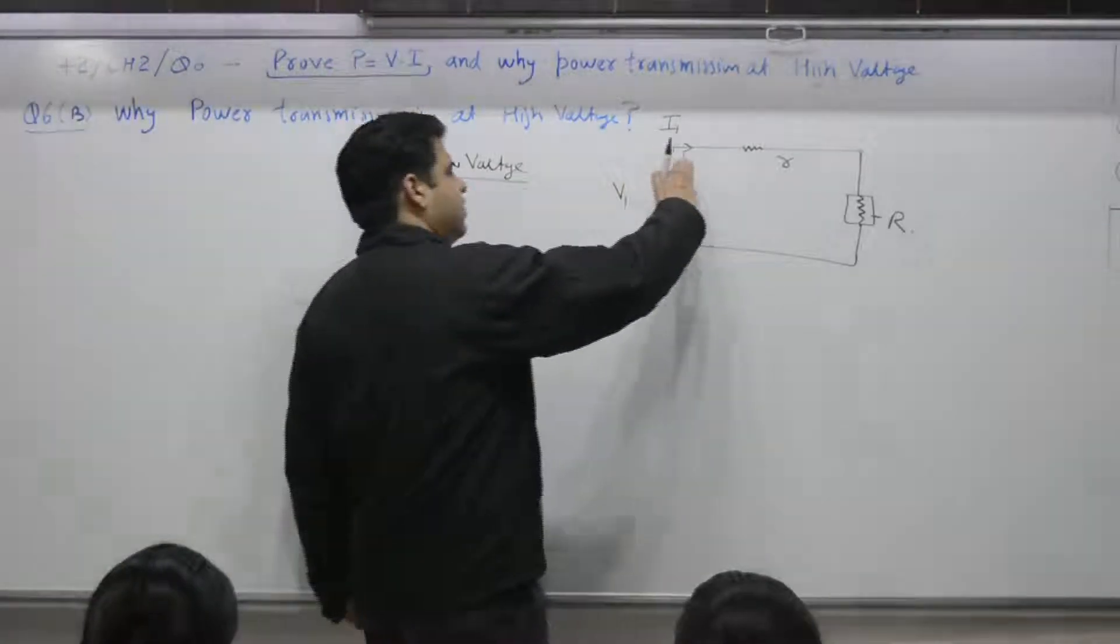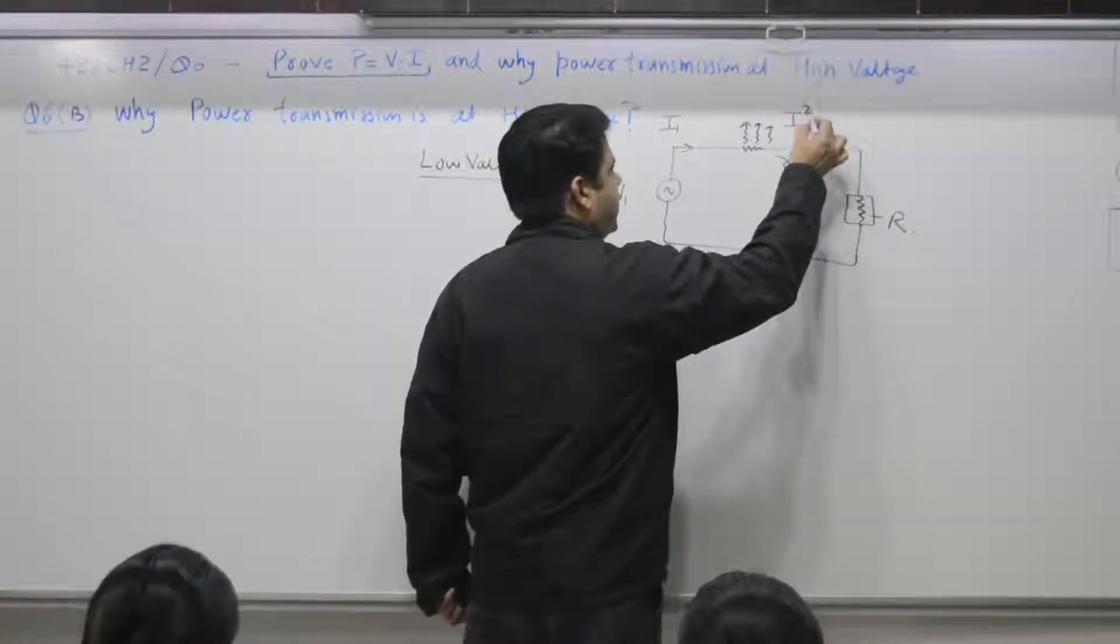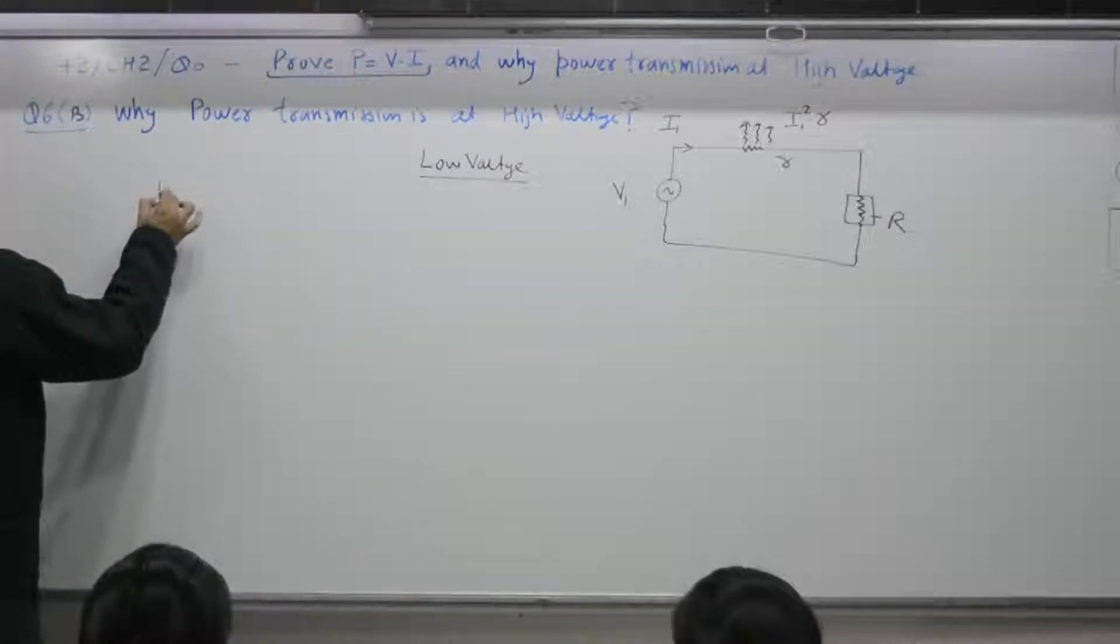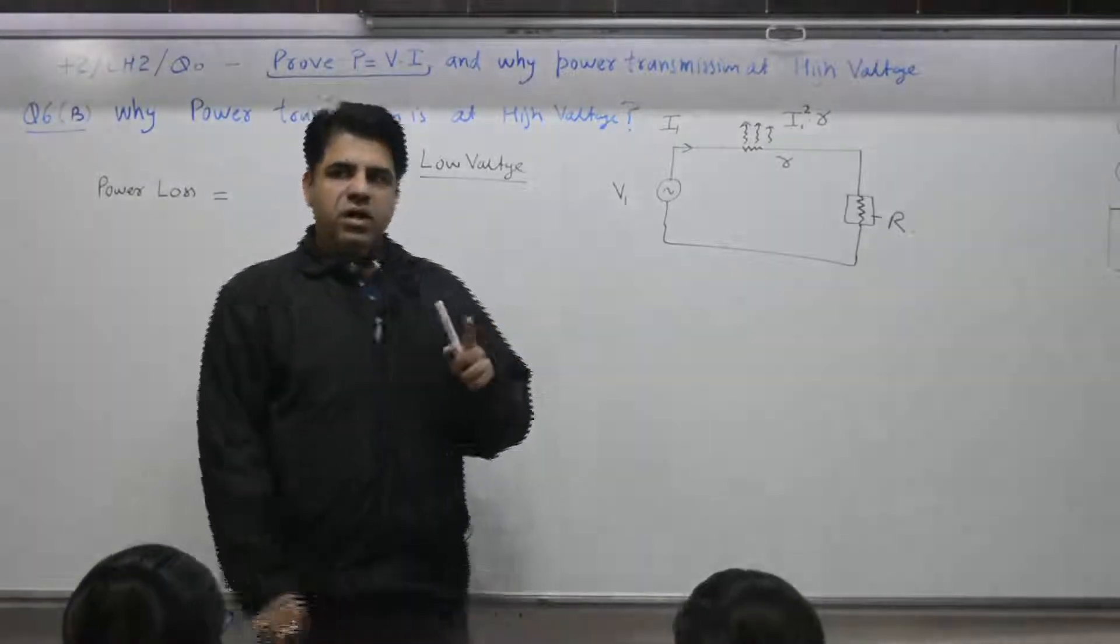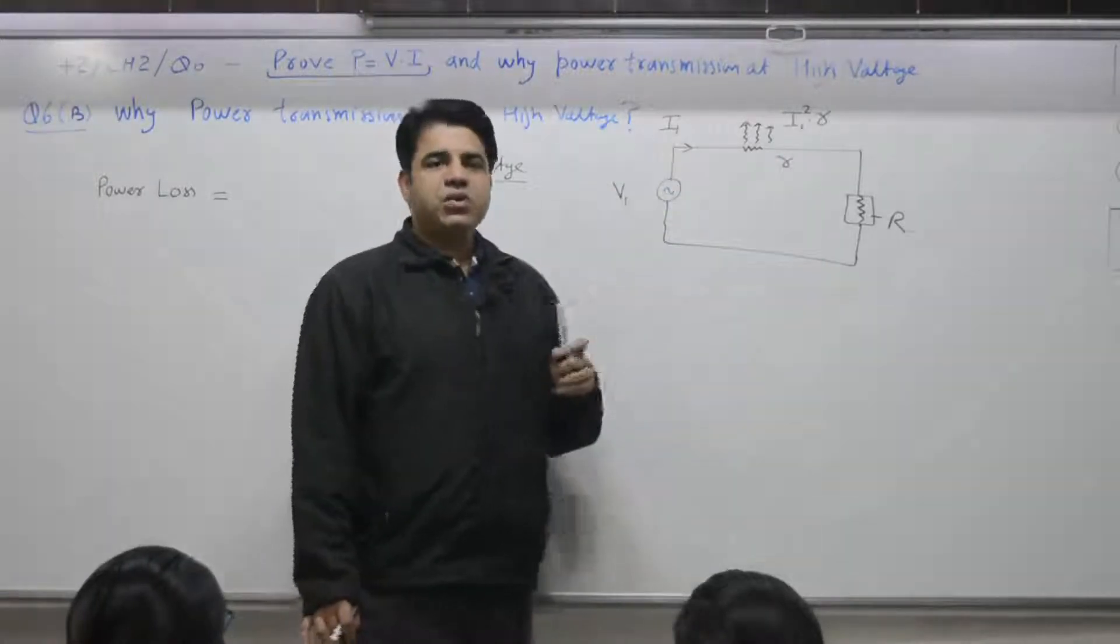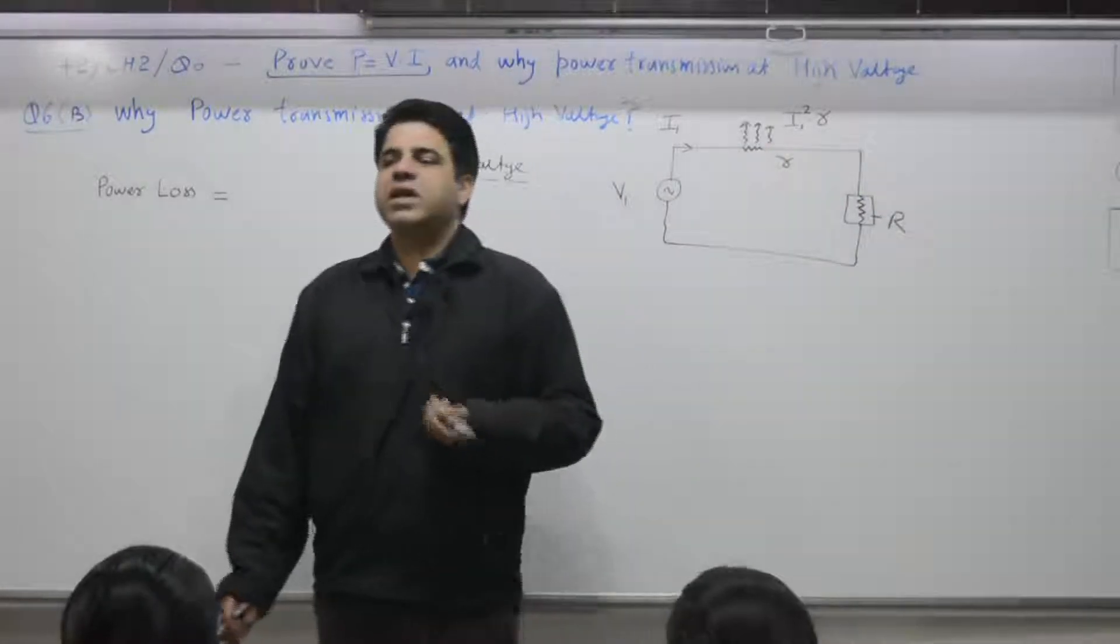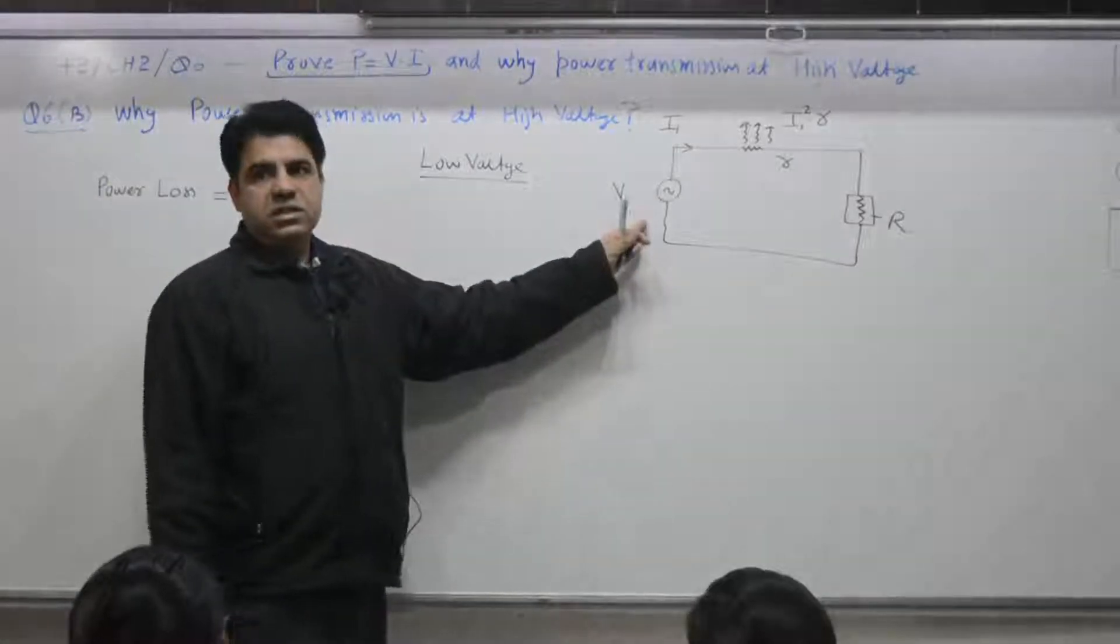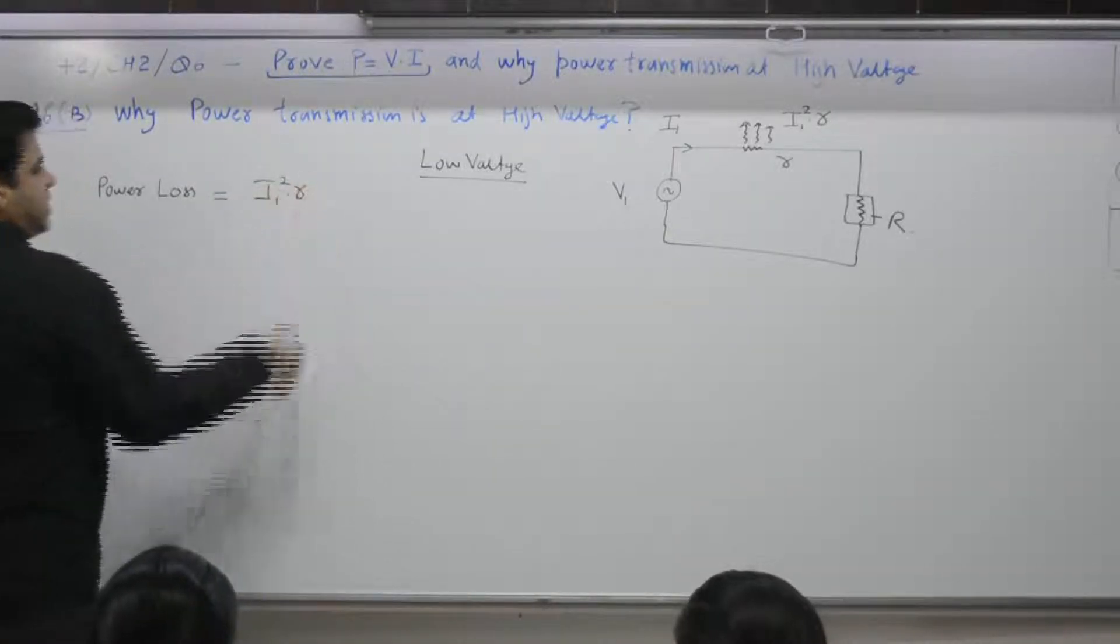So, there is power being transferred from one place to other place. What is the loss? Yes. Current square into resistance of the wire. So, low voltage, first case, loss, power loss. Where? On the way. You can pay electricity bill corresponding to your meter charges. But you won't pay for losses on the way because your electricity meter is installed at your residence here. So, who pays for this? Government. This transmission loss is loss of a government or the agency which is generating and transmitting power. This is one case. Loss is how much? I1 square into R. This is one.